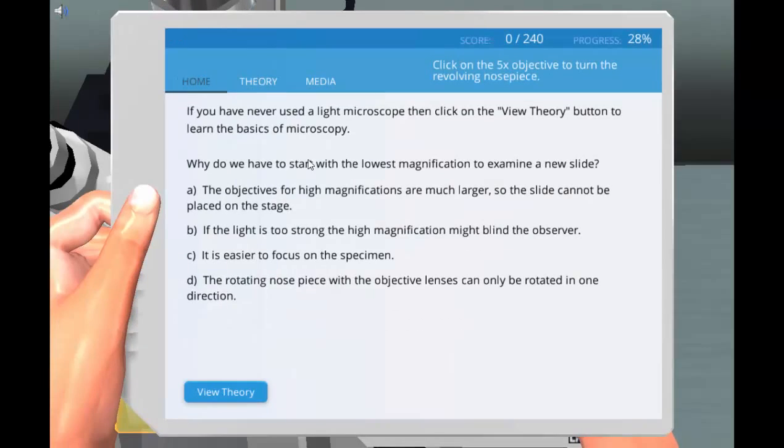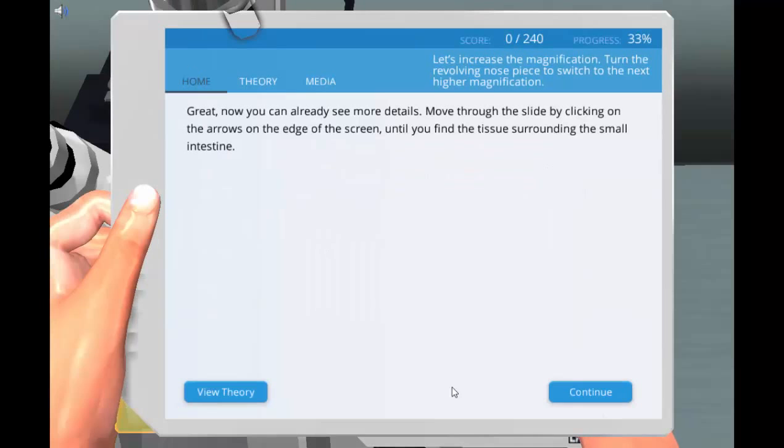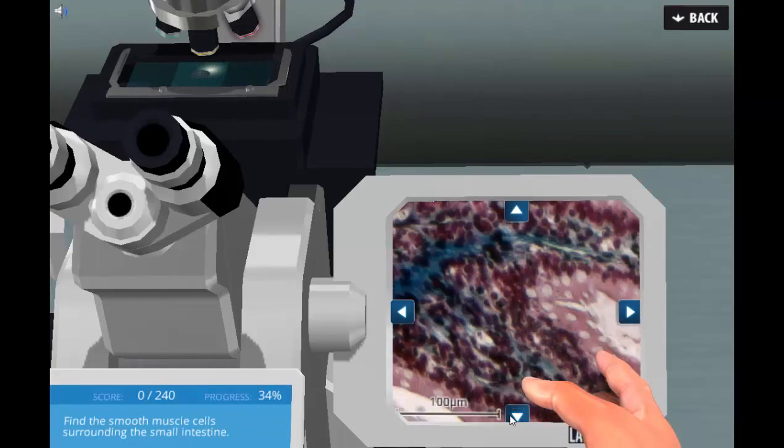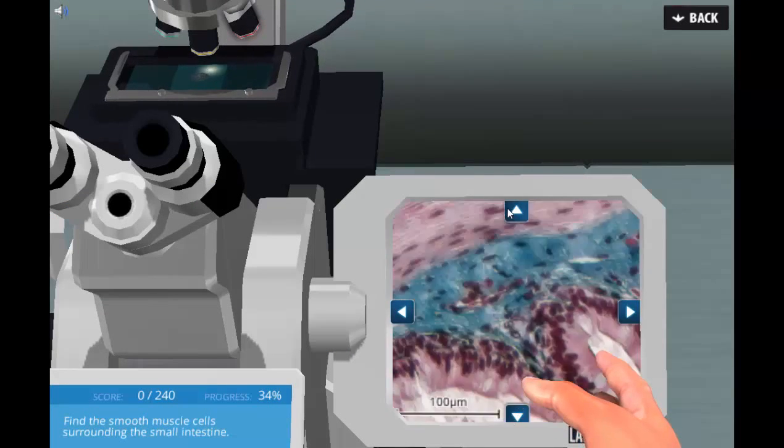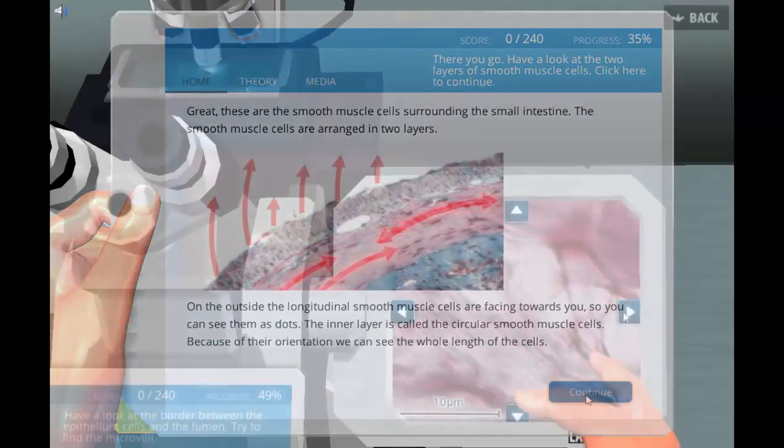Using the five-power magnification, students identify the villus and then proceed with higher magnifications to identify smooth muscle, extracellular tissue, epithelial cells, goblet cells, and the nuclei.